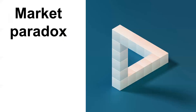The first term we're going to talk about is the market paradox. As you can see in the picture on your right, it's a paradox — you cannot say if the shape is standing or horizontal or vertical, and you get lost. Market paradox, like the stock market paradox, is the case where it is actually an efficient market.